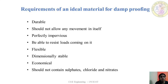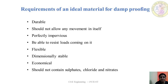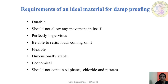The material should also be able to resist the load coming on it — for example, if the damp proof course is provided in a wall or floor, it should carry the load without failing. The damp proofing material should be flexible, accommodating certain movements without fracture or cracking. It should be dimensionally stable. It should be economical and not very expensive. It should not contain sulphates, chlorates, or nitrates, as these would be harmful to the structure.